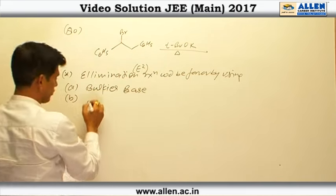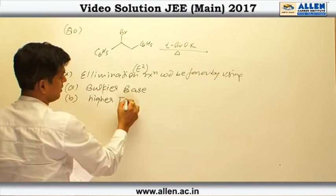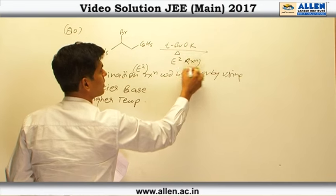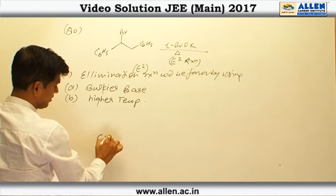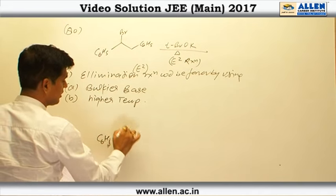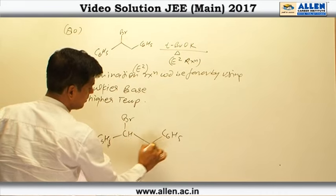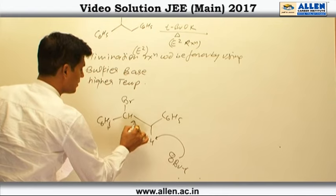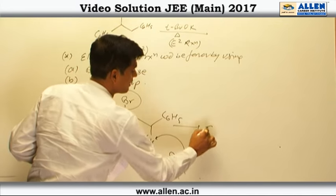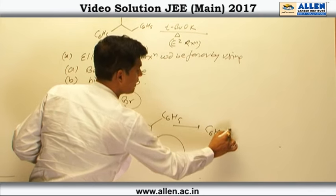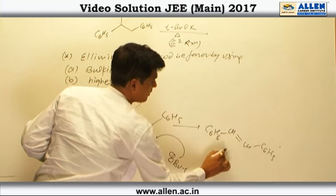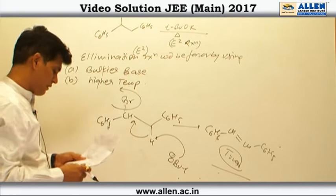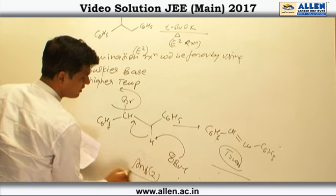Higher temperature also favors elimination reaction. So this is an example of an E2 reaction. In E2, the base (OBut) approaches H, with simultaneous elimination, giving the alkene C₆H₅CH=CHC₆H₅ (trans) as the major product. Since in all options only option 2 contains the alkene, the answer is option 2.